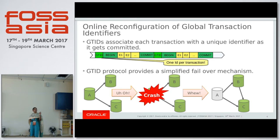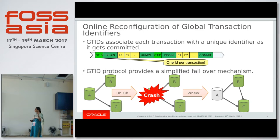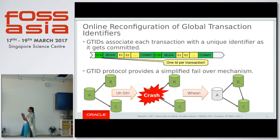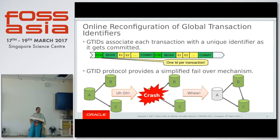You choose the server which has more GTIDs executed on it and you promote it as master. During the failover, when the slave connects to the new master, all it has to say is to make use of the GTID auto-position protocol. Once you set auto-position equal to 1, it takes care of sending what transactions the slave has to the master. The master then knows which transactions the slave has and sends whatever is missing. So the failover mechanism has become very simple with the introduction of GTIDs.